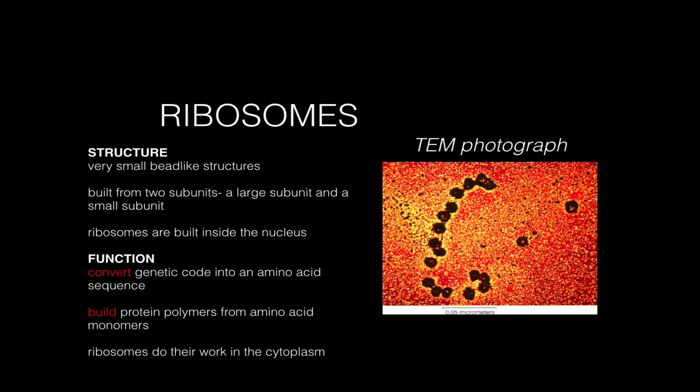Here's a transmission electron microscope of some actual ribosomes. They're actually very small to photograph. You can see each one of these little bead-like structures is a ribosome. So there's one here, there's one here, and these ribosomes are all held together because they're reading the same piece of genetic code.